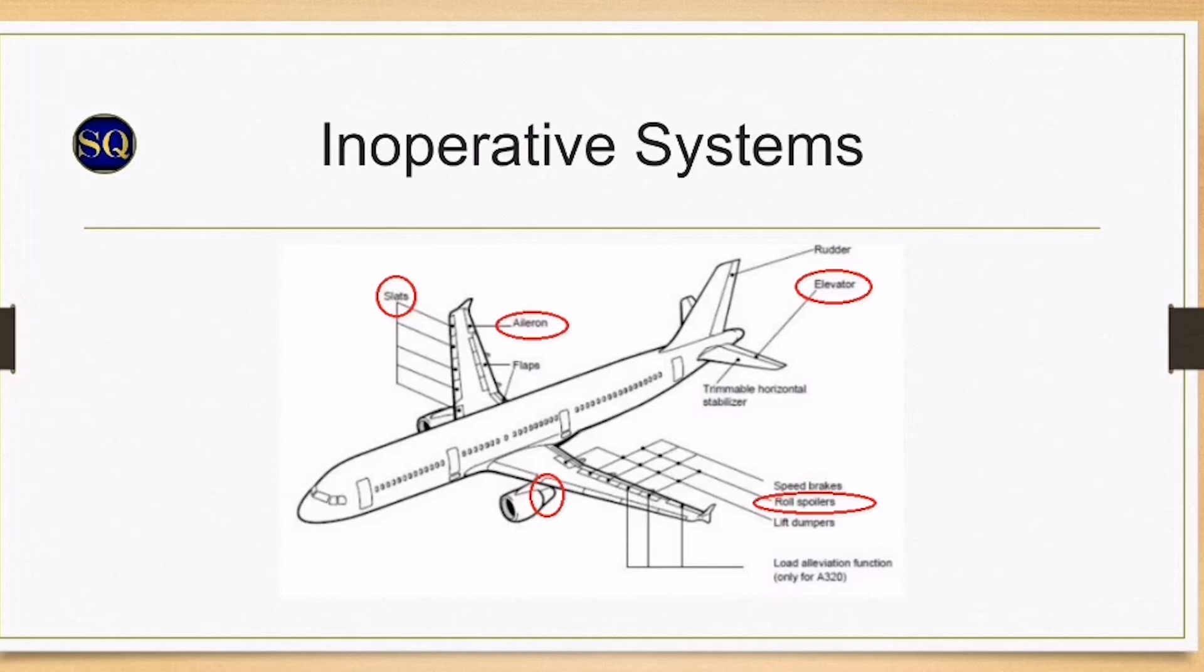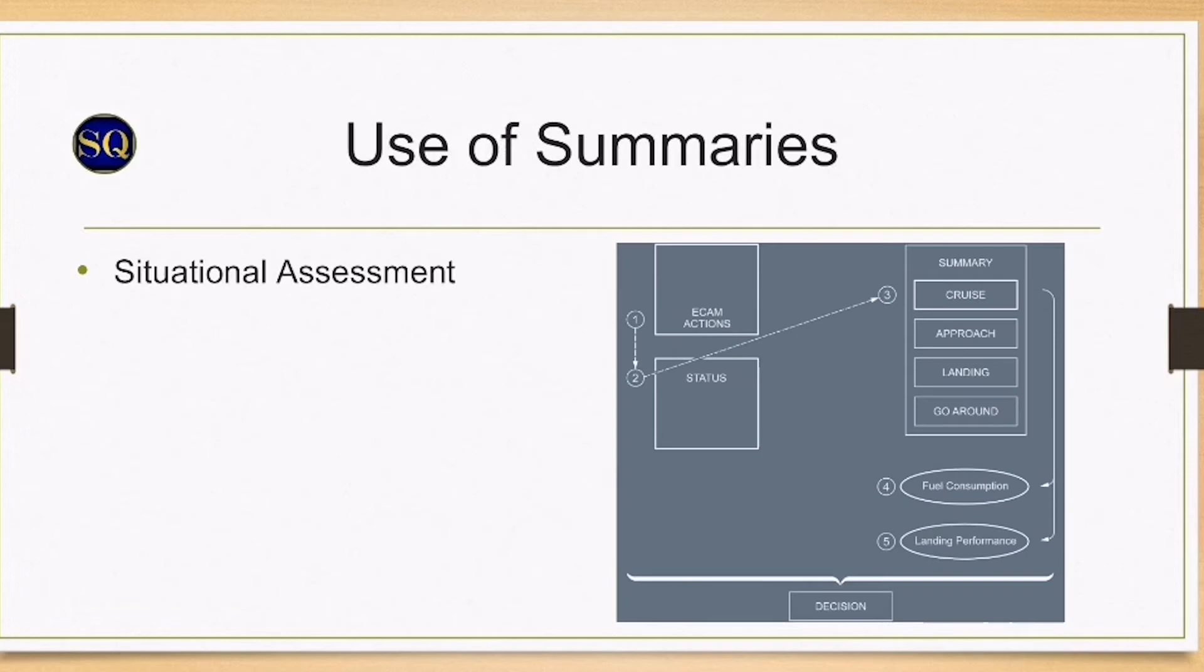Reverser 1 is inoperative. Landing gear is gravity extend with no retract. Normal braking is inoperative. Alternate brake with anti-skid is available but no autobrake. Emergency generator is inoperative and your ECAM actions is complete. It's gonna be a long day for you, man.